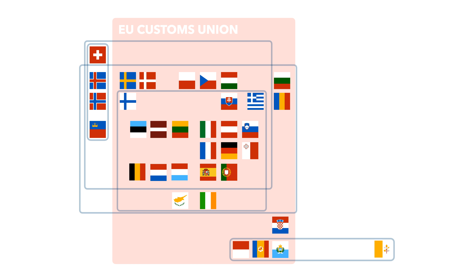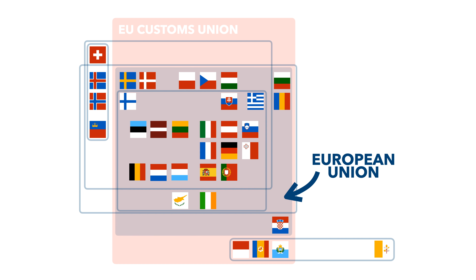The customs union includes all 27 EU countries, but also includes a few others. Monaco and the United Kingdom are both full members of the customs union — well, Britain is for now at least — and Andorra, San Marino, and Turkey all have bilateral customs agreements with the EU, thus bringing them into the fold.